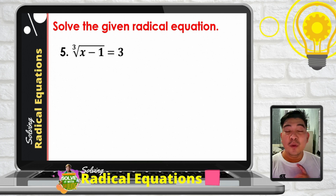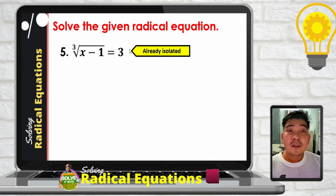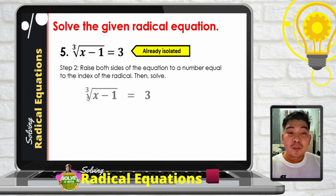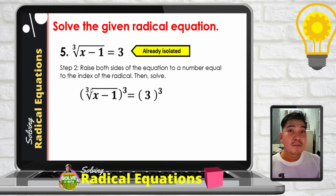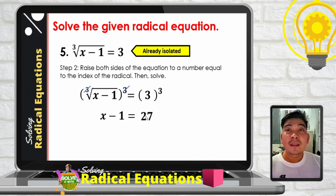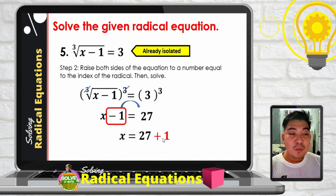Example 5: the cube root of the binomial x minus 1 is equal to 3. The equation is already isolated. Step 2: since the index is 3, we cube both sides. The quantity cube root of x minus 1 cubed gives x minus 1, and 3 cubed is 27. Applying the addition property of equality, transposing negative 1 gives x equals 27 plus 1, which is 28.